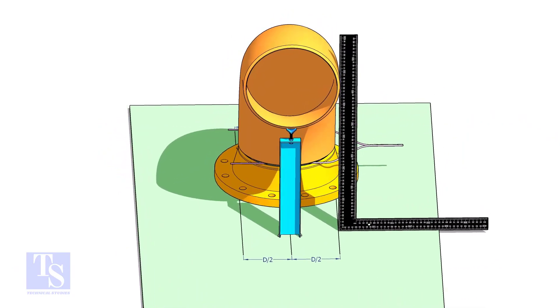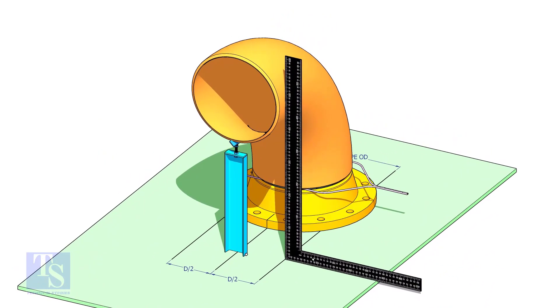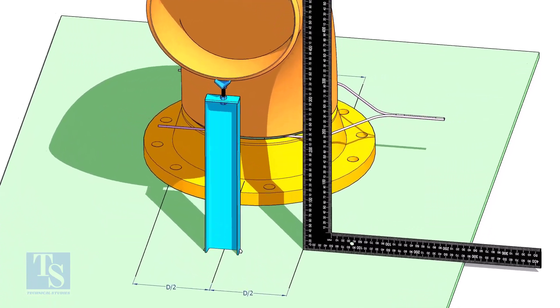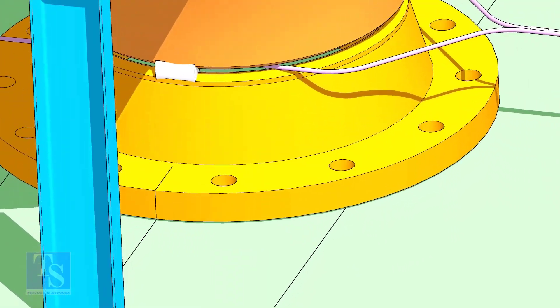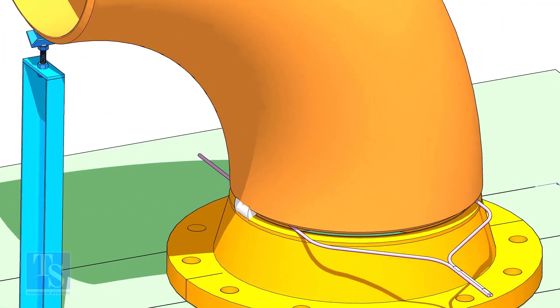Make sure the face of the elbow and the lines are parallel. Tack weld on all four sides.